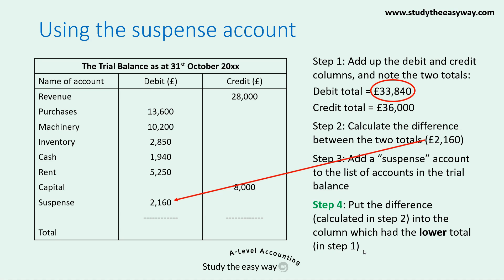The final step is to add up the debit and credit columns again and write in both of the totals. You'll see that now they are the same as each other and so the trial balance balances, which is what we need. We've done this by forcing the debit column to add up by putting in that suspense amount.